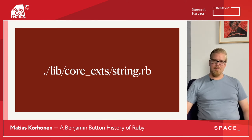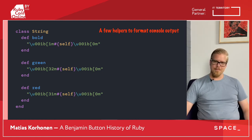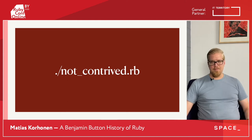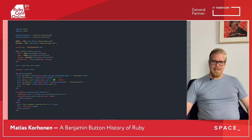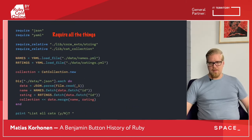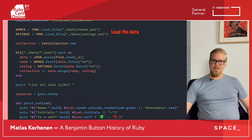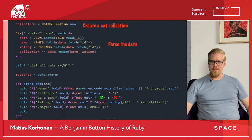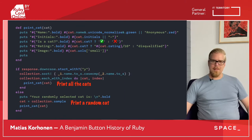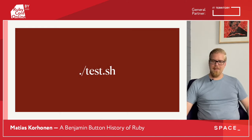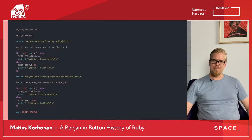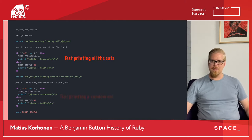We extend the string class a little bit, just to get a few helpers for some pretty console output. Then we have our main Ruby script, which is not_contrived.rb. We require all the things, load our names and ratings, parse our JSON files and push those to the cat collection. We have this awesome CLI which can do two things: print all of the cats, or pick a random cat and print the details. And finally, we have a little shell script that's a test harness — it tests that both code paths run without errors, and exits with code zero.